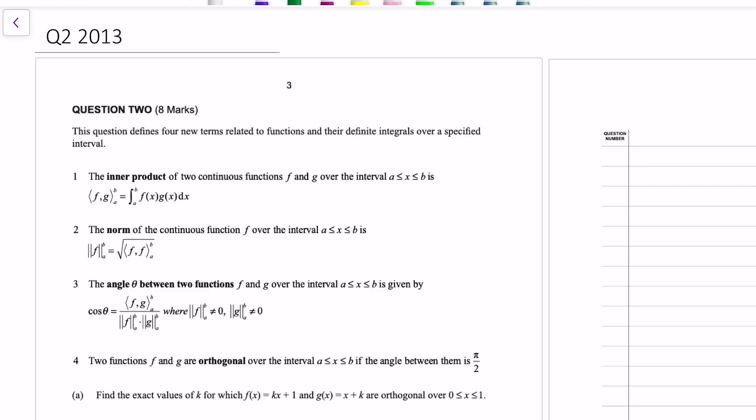Kia ora and welcome to this video on question 2 of the 2013 Scholarship Calculus exam. This question is kind of strange. It introduces you to four different mathematical terms that you wouldn't have seen before, or maybe in Cambridge maths, but I first got exposed to all this stuff at university when you start talking about angles between functions and orthogonality.